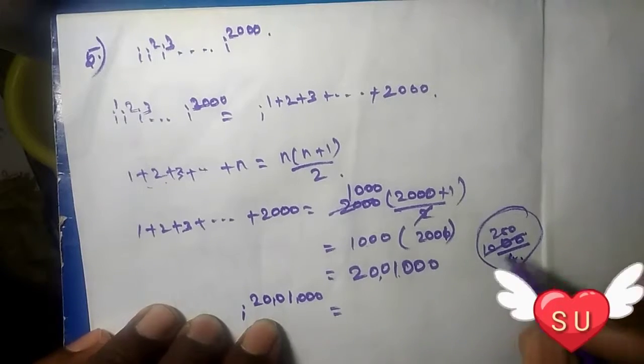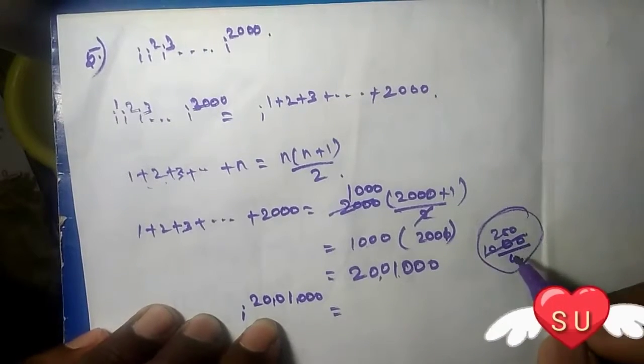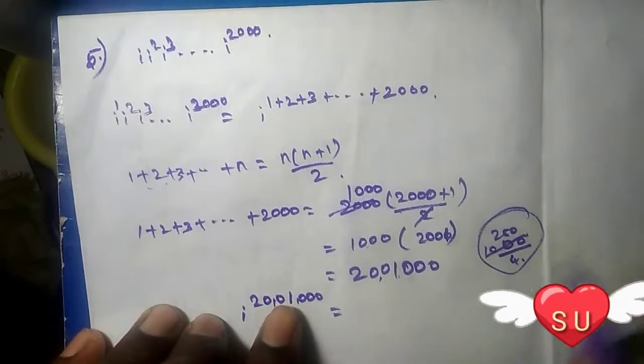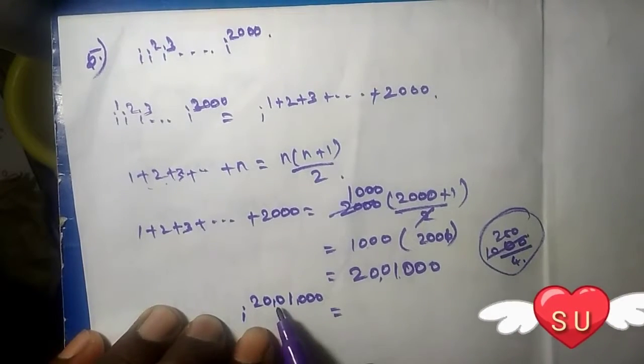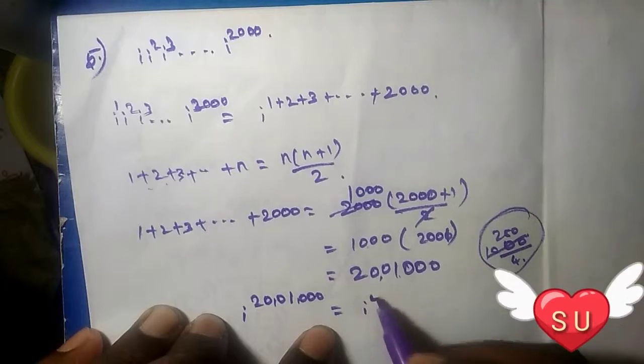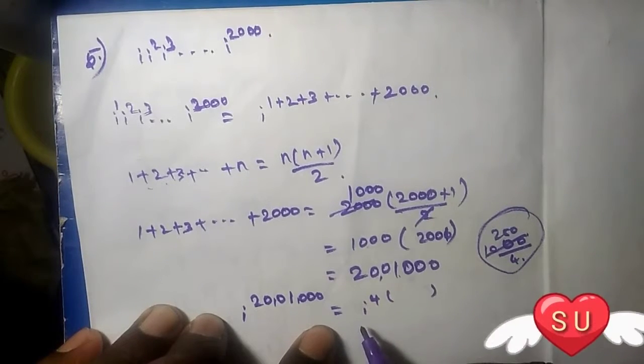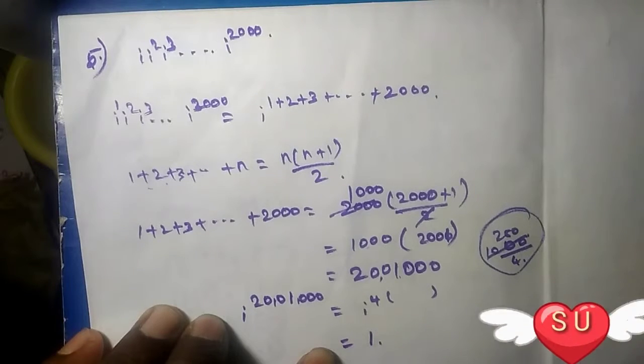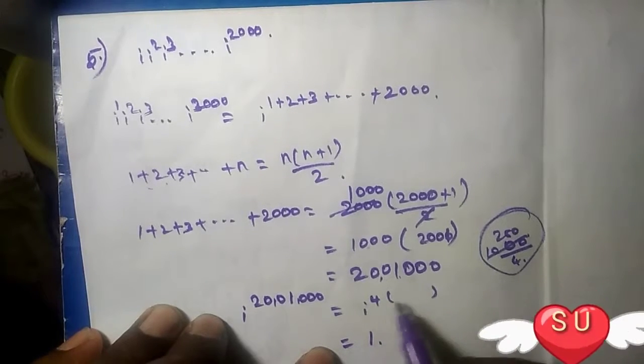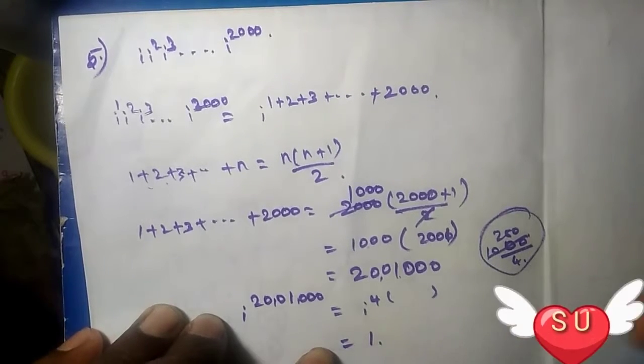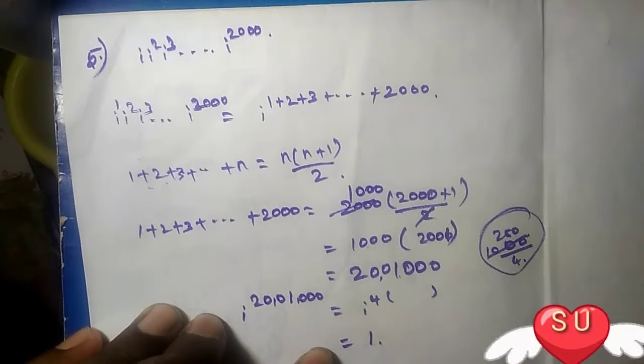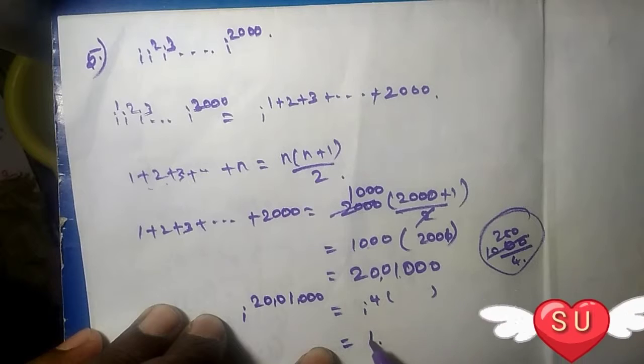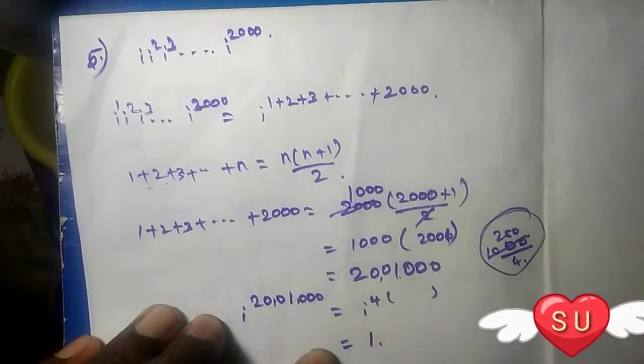Using the pattern for i power four times something. The answer is going to be 1. Using the pattern on the four table, i power four, the answer is 1. So this is your answer.